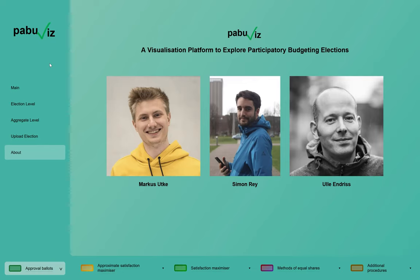That was a quick overview of PABOUVIS, the website you can use to explore participatory budgeting data and compare different voting rules. Check the website at PABOUVIS.org, and I hope to see you soon.